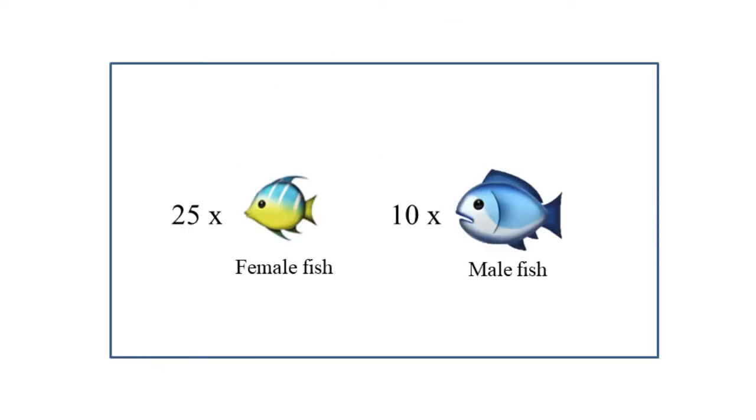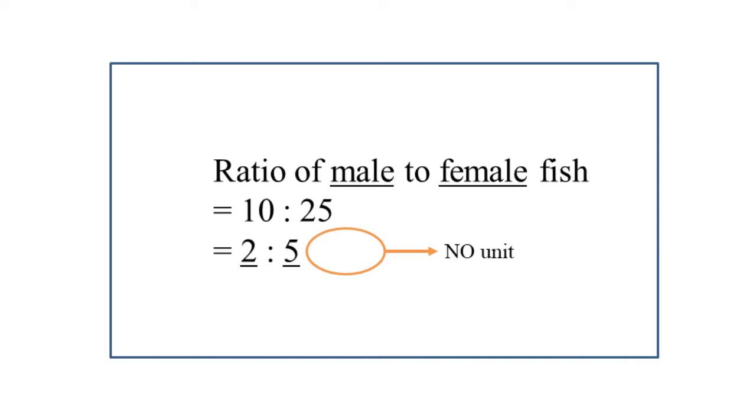For example, there are 10 male fish and 25 female fish in a tank. The ratio of quantities of the same kind, a ratio has no units. In a ratio, the order of the term is critical.